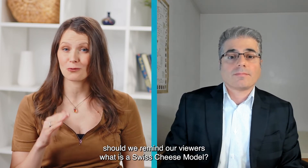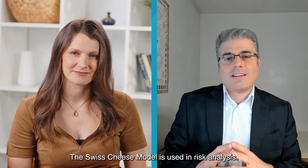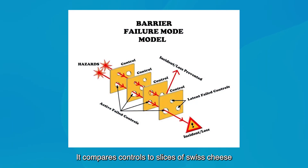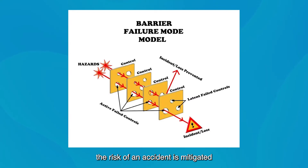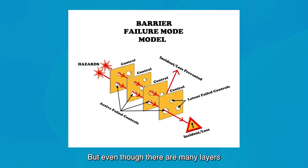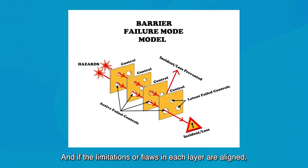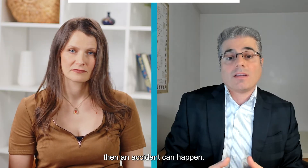Should we remind our viewers what is the Swiss cheese model? The Swiss cheese model is used in risk analysis. It compares controls to slices of Swiss cheese stacked side by side. In the model, the risk of an accident is mitigated by the different layers of controls or barriers. But even though there are many layers between hazards and accidents, each layer is not perfect. And if the limitations or flaws in each layer are aligned, then an accident can happen.